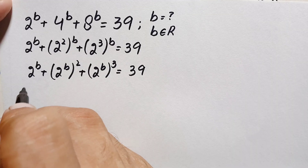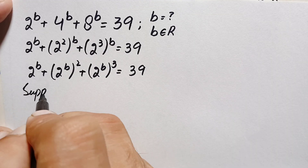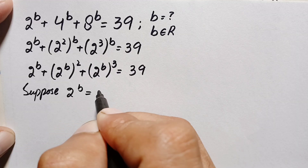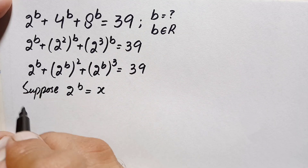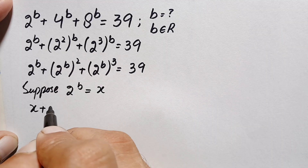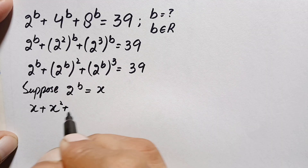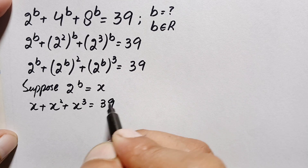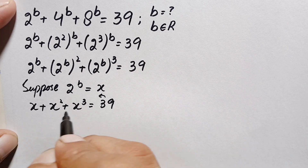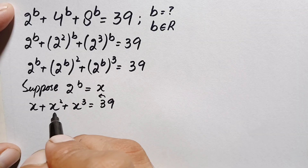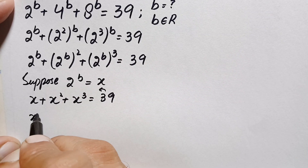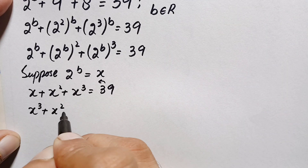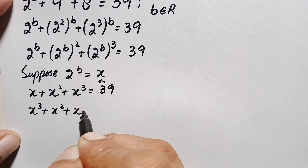Since the base 2 raised to power b is the same in all terms, we make a substitution. Let x equal 2 raised to power b. Then the equation becomes x plus x squared plus x cubed equal to 39. Taking 39 to the left-hand side and arranging by power, we get x cubed plus x squared plus x minus 39 equals 0.